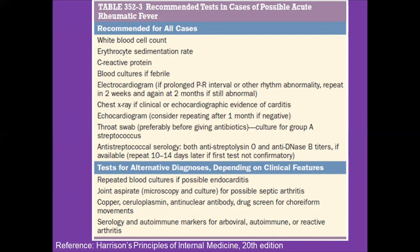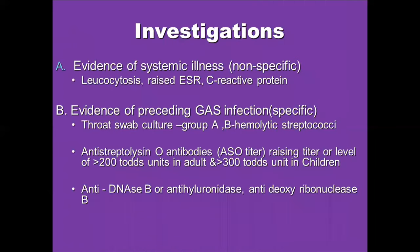To confirm evidence of group A streptococcal infection, throat swab culture as well as anti-streptococcal serology — ASO titer, anti-DNase B titer, or anti-hyaluronidase titer — can be used. Evidence of systemic illness is provided by leukocytosis, elevated ESR, and elevated CRP.